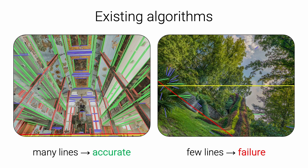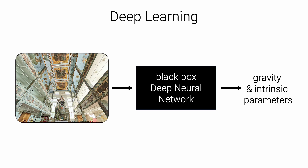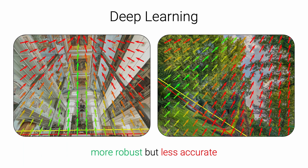When few lines are visible, such as in natural environments, these algorithms fail catastrophically. They also struggle with lens distortion because lines become curves. This low robustness significantly impairs wide adoption. Alternatively, some research has tackled this problem with deep neural networks trained in a supervised manner to estimate the calibration parameters. These approaches can leverage many more geometric and semantic cues, and thus exhibit impressively high robustness. To generalize well to different environments, they however require large amounts of training data that is costly to acquire. They are also far less accurate than classical counterparts based on 3D geometry.